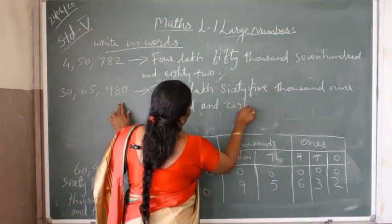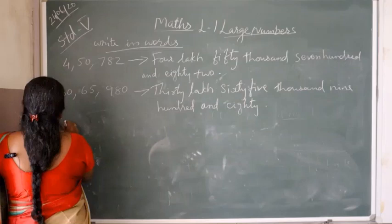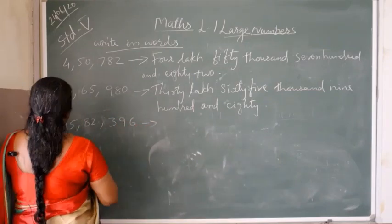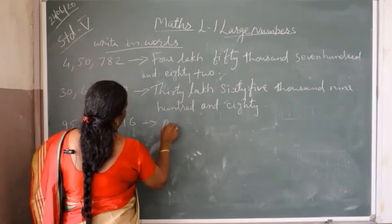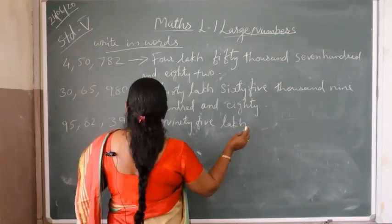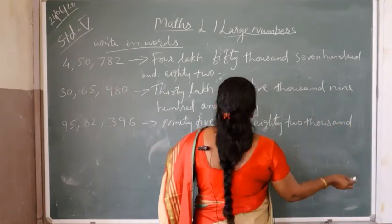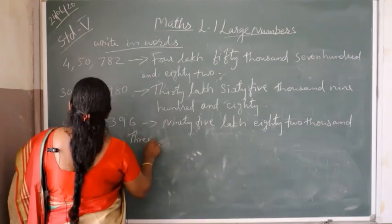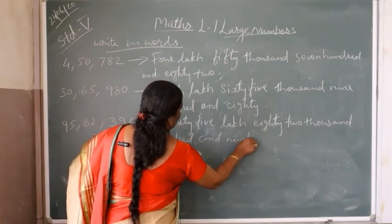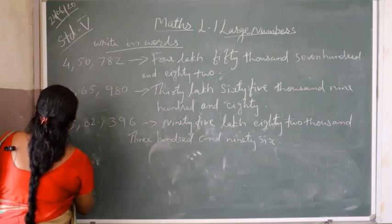One hundred and eighty-three. Another question: ninety-five lakh eighty-two thousand three hundred and ninety-six — 95,82,396.